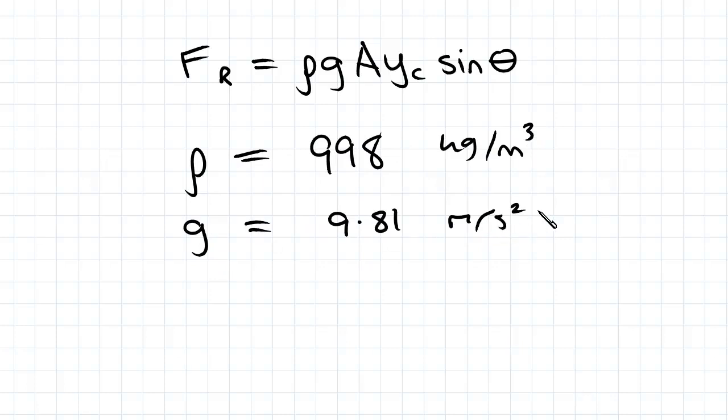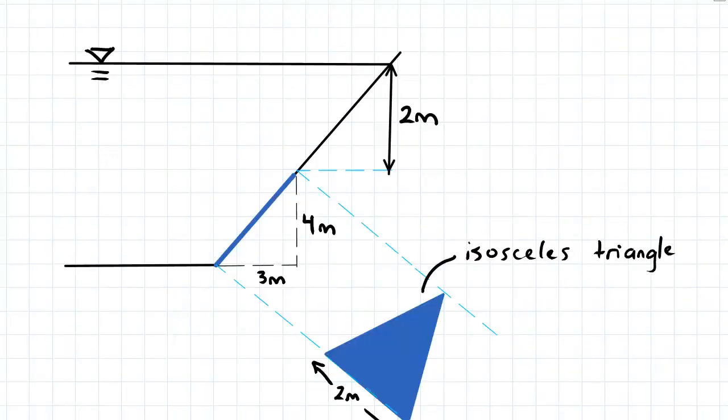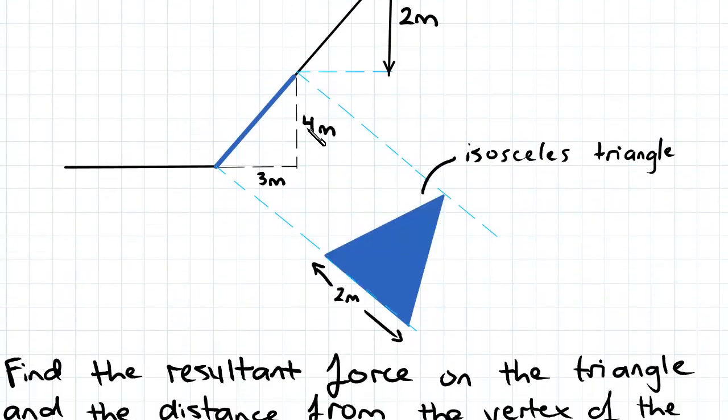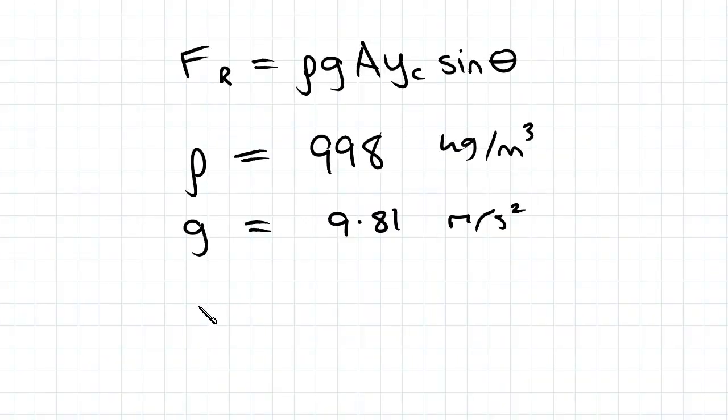A, the area of the triangle: 4 squared plus 3 squared, root of that will be 5, so the height of the triangle is 5. Times half the base, which is 5, gives us 5 meters squared.